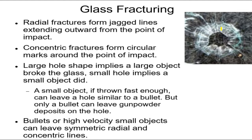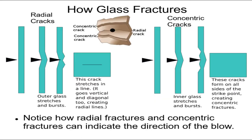Looking at a shattered piece of glass like this, you'll notice there are radial lines that go straight out, and there are circular lines called concentric lines — concentric fractures or concentric breaks. These are made by different forces — similar, but different.